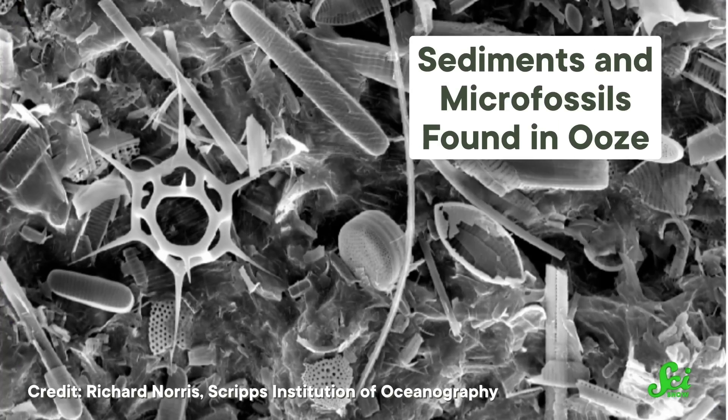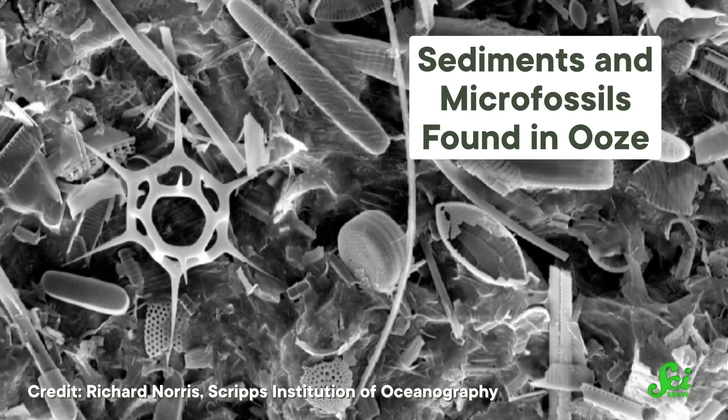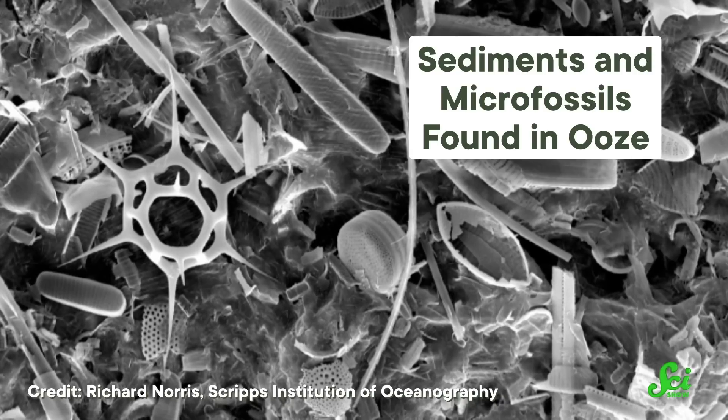While this study just looked at one mega-slide from a long time ago, this kind of phenomenon could be behind many other slides, too. Weak layers of ooze might spread across thousands of square kilometers, leaving huge chunks of the seafloor balanced on wobbly slabs of dead algae. And in the future, understanding how these buildups of microscopic algae lead to monstrous landslides may help us keep coastal regions safe. Which is no small thing.